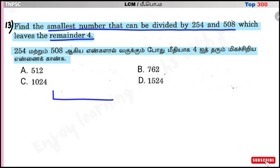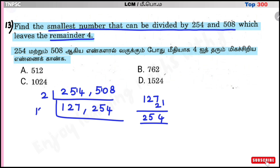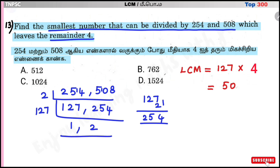LCM of 254 and 508: dividing by 2 gives 127 and 254; dividing again by 2 gives 127 and 127. Since 127 is prime and 127×2=254, the LCM is equal to 508.